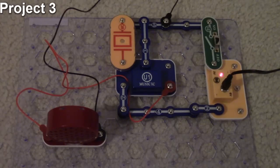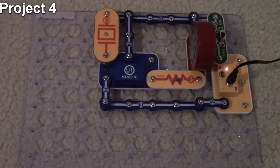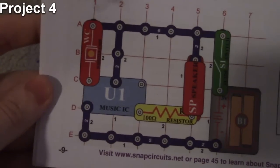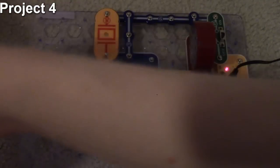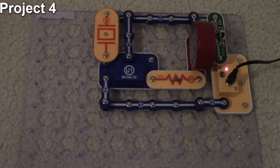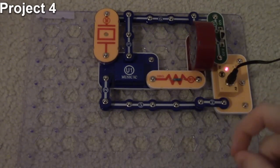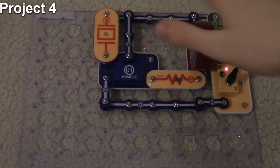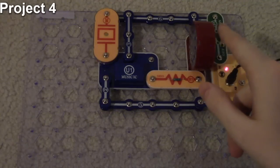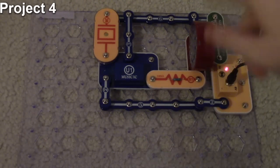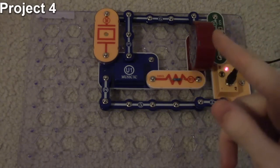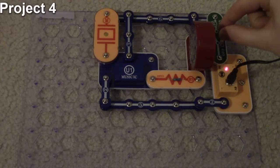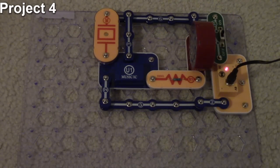Project number four is about adjusting the sound level. The objective is to show how a resistor affects the volume or amplitude from the speaker. We have a circuit very similar to the previous one, but we've shifted components to make room for our speaker and a 100-ohm resistor connected in line with it. With the circuit on, notice the speaker is a lot quieter.